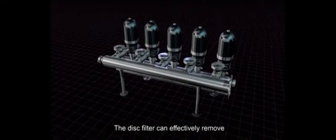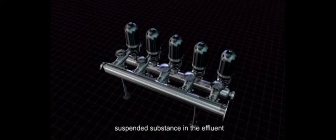The disc filter can effectively remove suspended substance in the effluent and enhance the durability of the downstream filtration membranes. After filtration, the effluent becomes filtrate and passes into the ultrafiltration system for the second stage filtration.